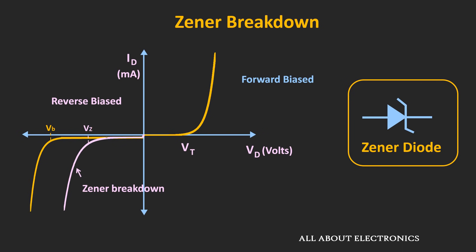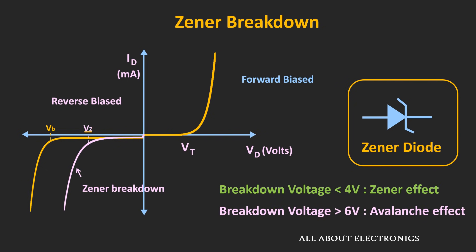The voltage at which this Zener effect starts is known as the Zener voltage. From the graph, even if we increase the applied voltage beyond the Zener voltage, the voltage across the diode will almost remain constant and only the current through the diode will increase. Because of this property, the Zener diode is used as a voltage regulator in many applications. Commercially available Zener diodes can have a Zener voltage from 2V to even 200V. For Zener diodes with a breakdown voltage less than 4V, the Zener effect is predominant; for breakdown voltages above 6V, the avalanche effect is predominant; and between 4V and 6V, both effects are usually seen. Regardless of the breakdown mechanism, all diodes used as a voltage regulator are categorized as Zener diodes.